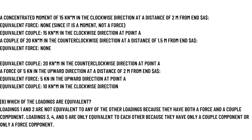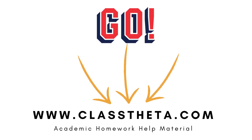A force of 5 KN upward at 2 meters from the end gives an equivalent force of 5 KN upward at point A and an equivalent couple of 10 KN·m clockwise. Which of the loadings are equivalent? Loading 1 and loading 2 are not equivalent to any other loading because they have both a force and a couple component. Loadings 3, 4, and 5 are only equivalent to each other because they have only a couple component or only a force component.